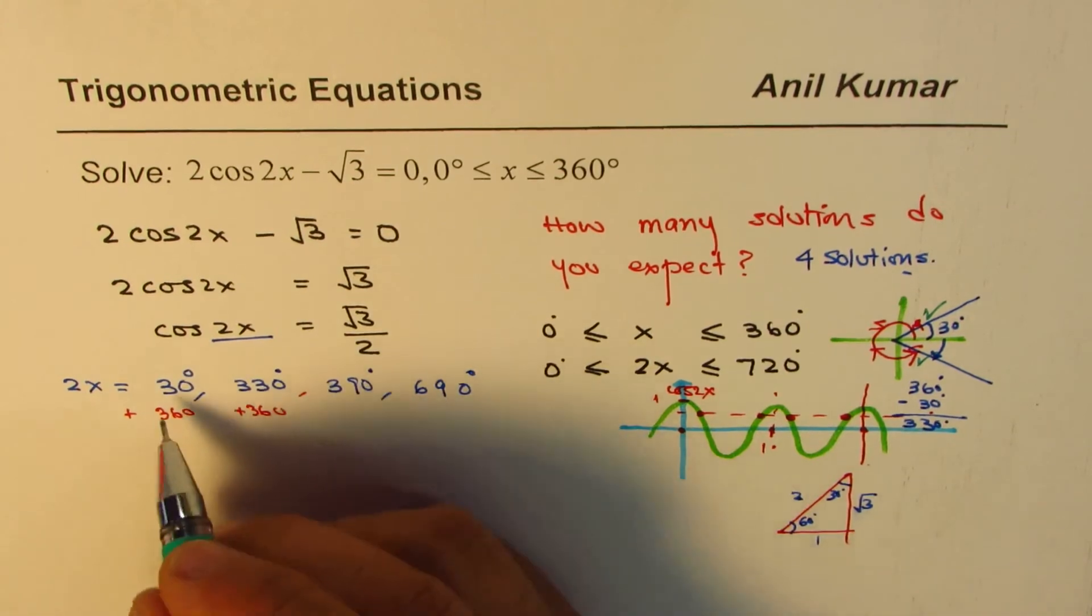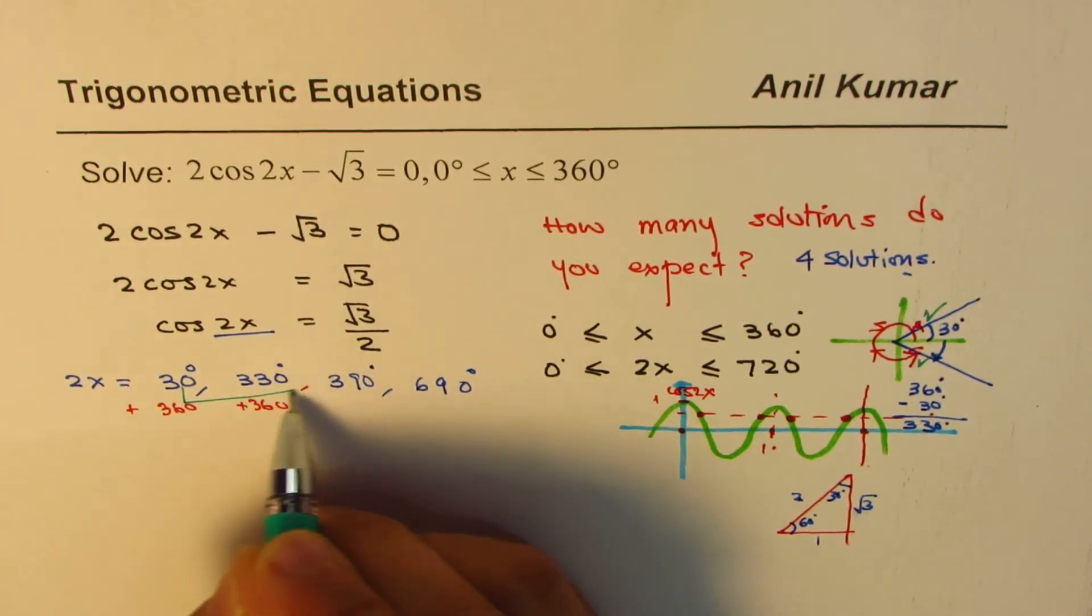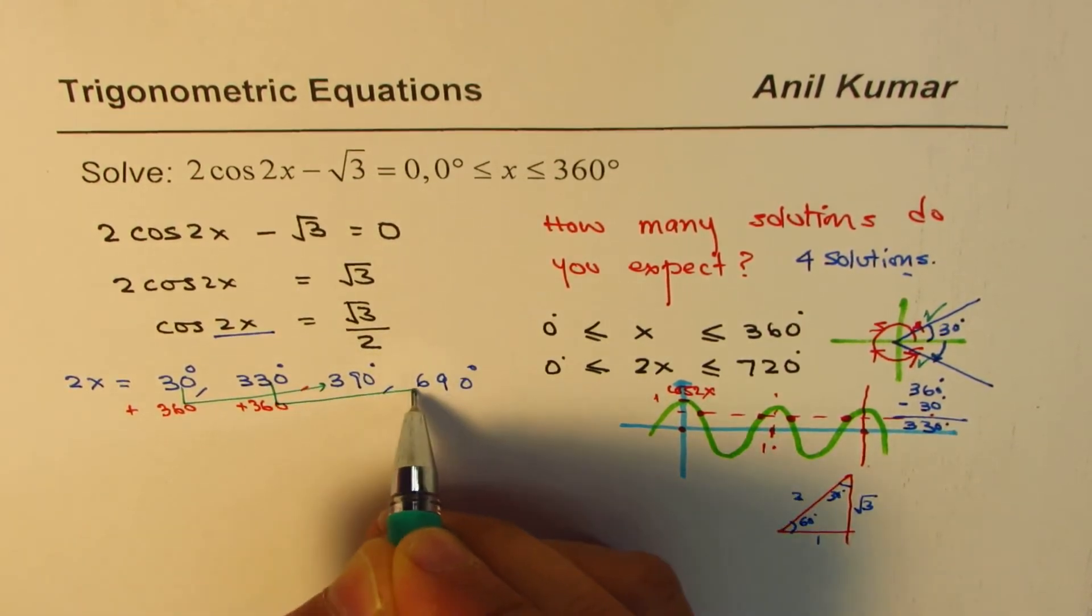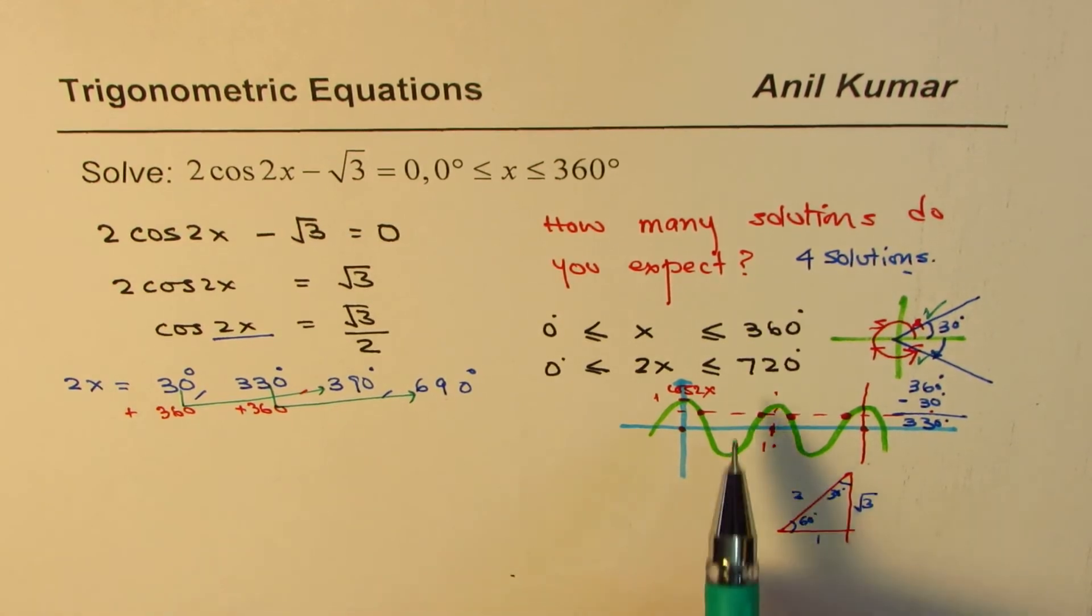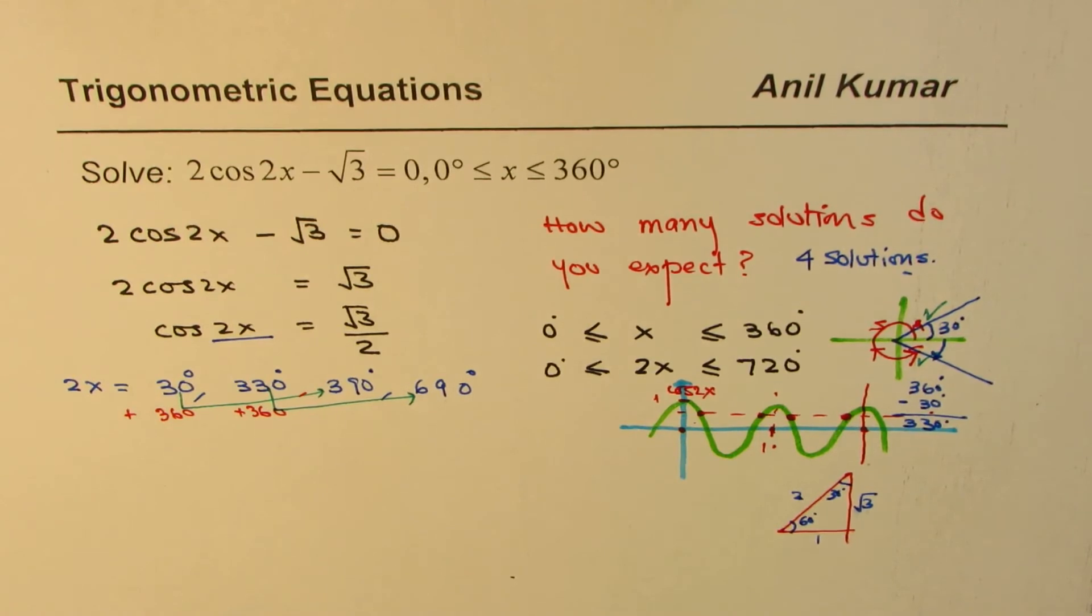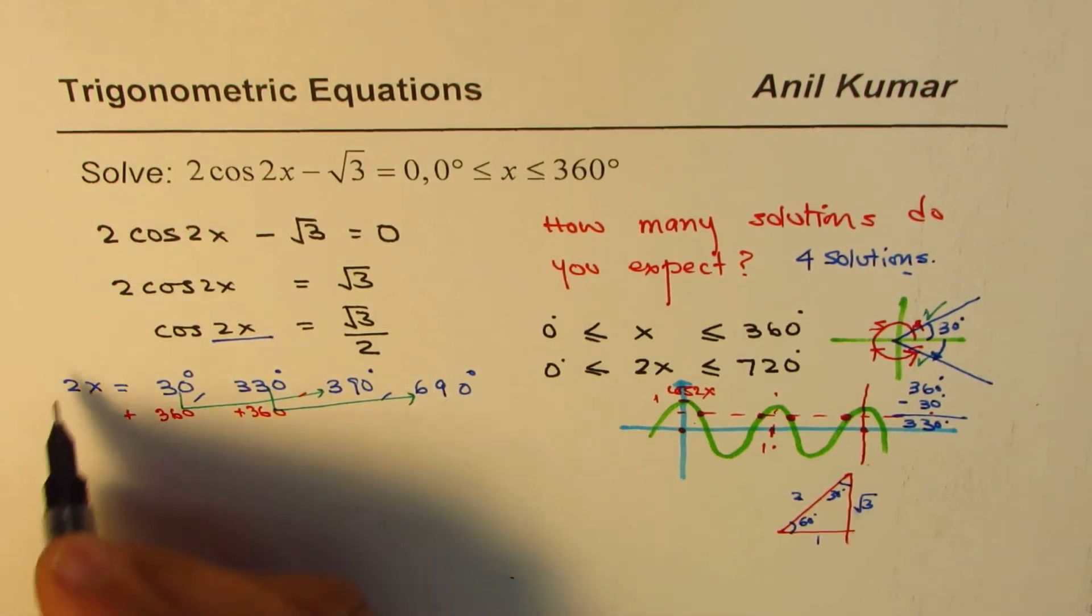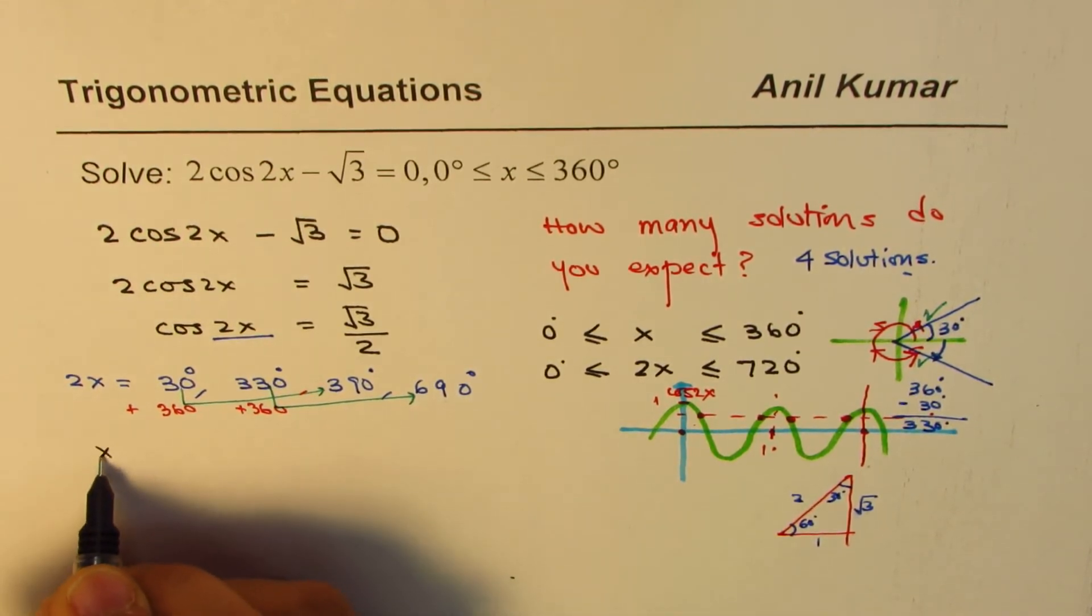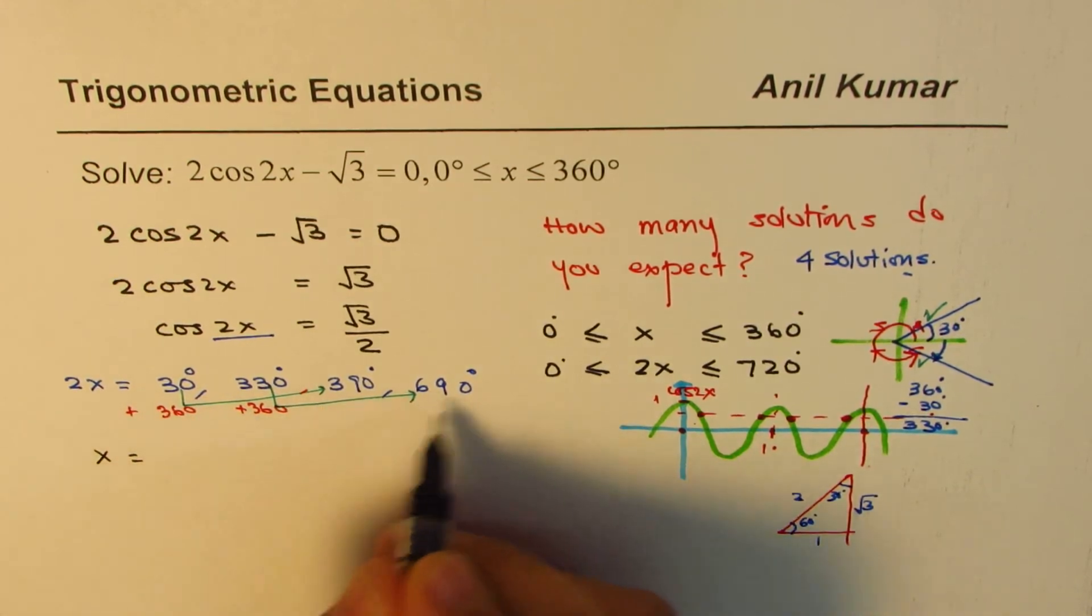Do you see those four solutions? That is how we get four solutions, solutions for 2x. So now from here, what is x equals to? Divide each by 2.